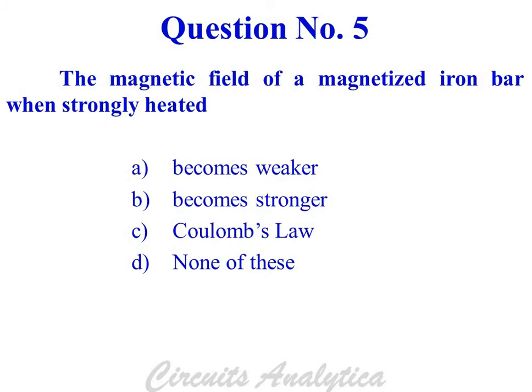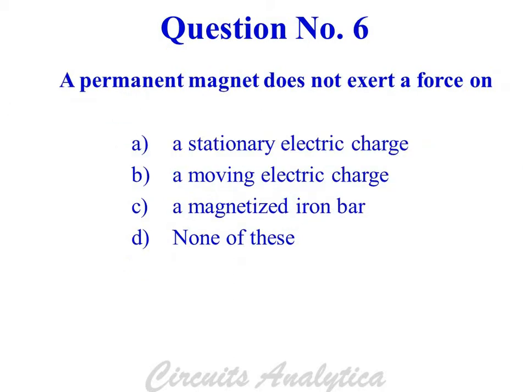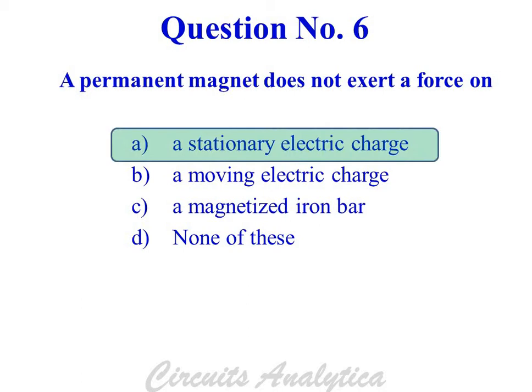The magnetic field of a magnetized iron bar, when strongly heated, becomes weaker. A permanent magnet does not exert a force on a stationary electric charge.